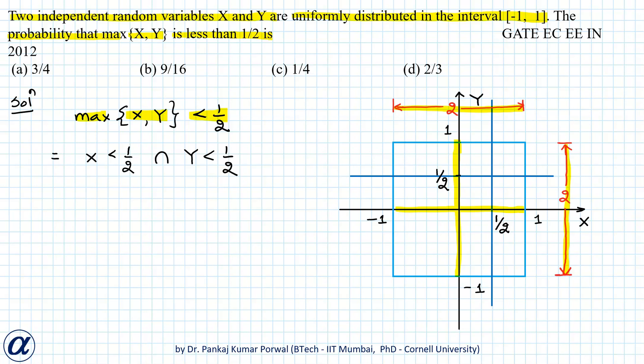X equals 1/2 on this line, so X will be less than 1/2 in the region left to this line. So X < 1/2 will correspond to the area in the square denoted by blue shading.